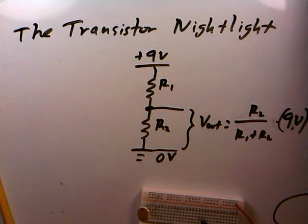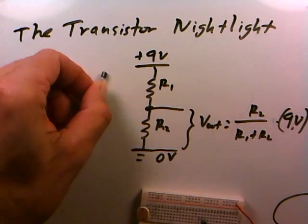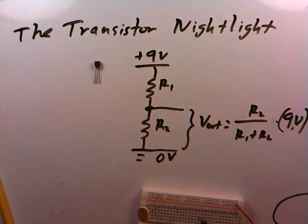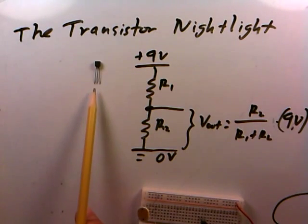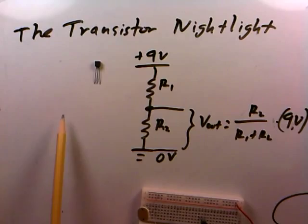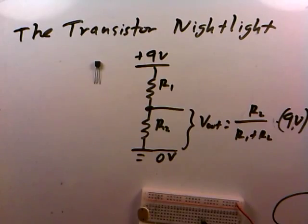In the previous few videos we've been trying to understand how transistors work. Transistors are these marvelously small devices that have three terminals called the base, emitter, and collector. We know we can turn a transistor on like a switch if the voltage on the base is at least 0.6 volts higher than that on the emitter, and if that happens current is allowed to flow between the collector and the emitter.